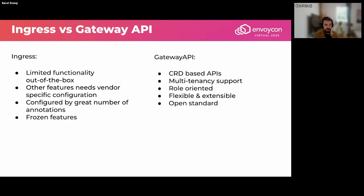Gateway API is awesome for several reasons. First, it introduces CRD-based APIs so everything is an object, making it easy to move between different environments. It has proper multi-tenancy support — you can place resources in any namespace. It's also role-oriented, so you can define organization layers with a GatewayClass at the top and Gateways in different parts of the organization. It's flexible, extensible, and built on open standards.